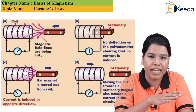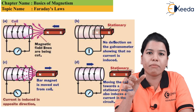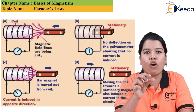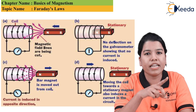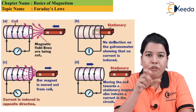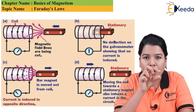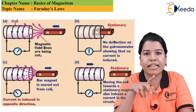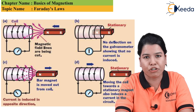Now, if you see figure A, when the north pole of the magnet is placed inside the coil there is a deflection in the galvanometer. Similarly, when the magnet is moved away from the coil, again we can see that there is a deflection in the galvanometer.